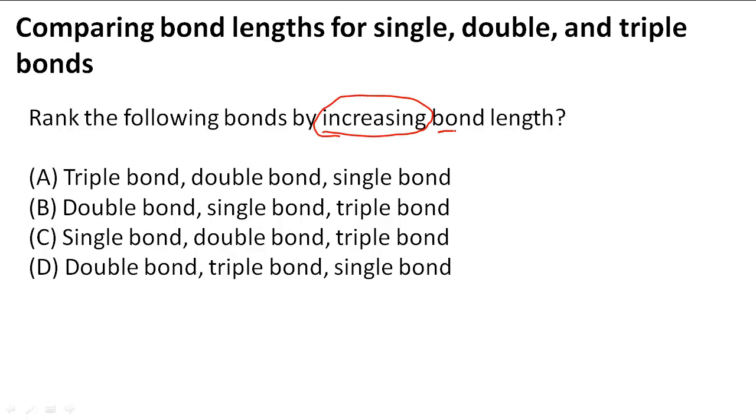We know that bond length actually decreases as we go from single, double, and triple bonds. As we go from single to double to triple, bond length decreases.